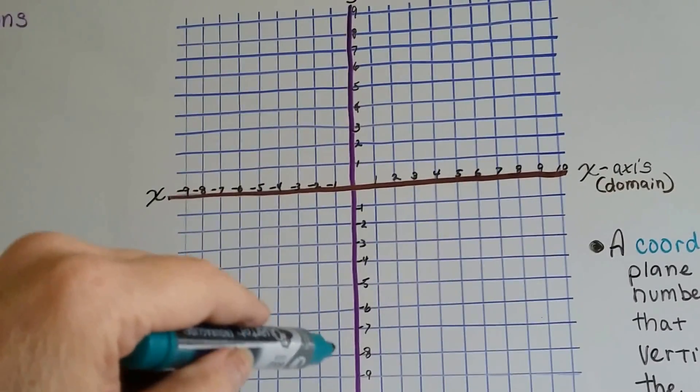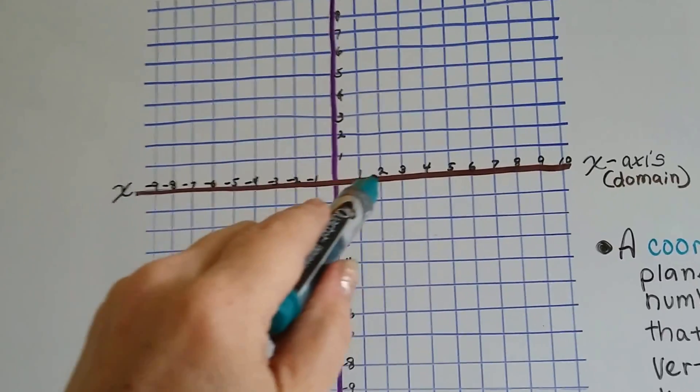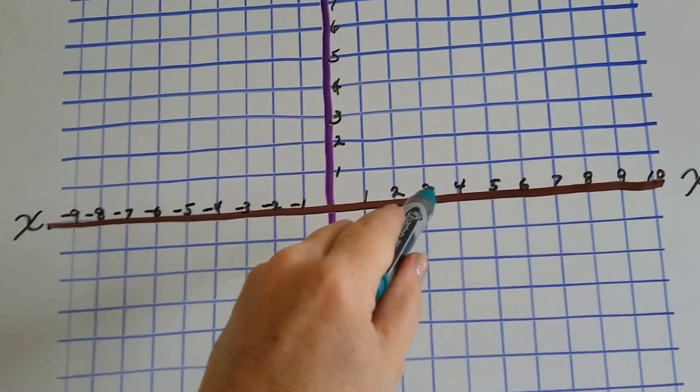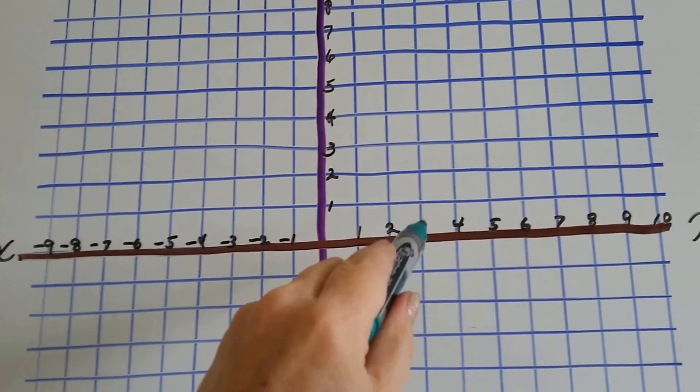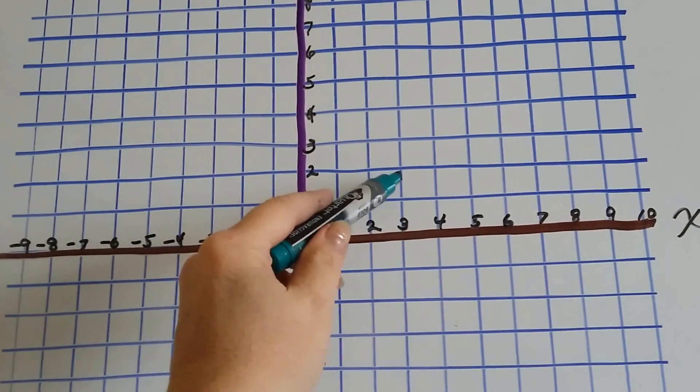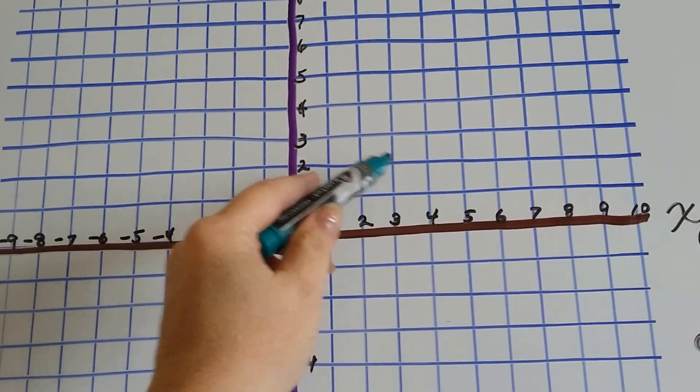So if we have a number like 3 comma 2, it tells us to go to x3, which is right here, and to y number 2, and that would be right here. And they would meet right there. Isn't that something?